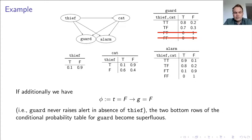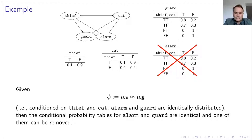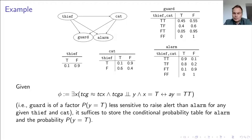Similarly, we can use novel probabilistic atoms to capture more elaborate features of probabilistic dependence. For instance, a formula can say that conditioned on teeth and cat, alarm and guard are identically distributed. From this it follows that one conditional probability table becomes redundant because it is identical with another one. Using quantifiers and connectives, it is possible to construct even more elaborate ways to specify how the joint distribution can be decomposed.